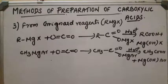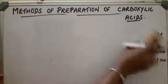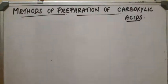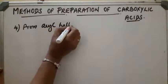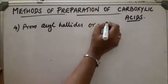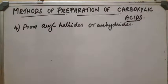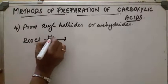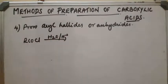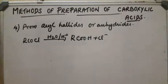Fourth method is from acyl halides or anhydrides. Acid chlorides (acyl chlorides) on hydrolysis give corresponding acids. For example, RCOCl on hydrolysis gets converted into RCOOH plus Cl⁻. This is the reaction of acyl halide.